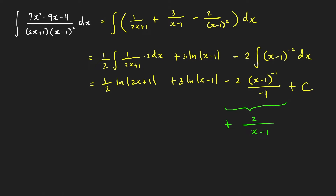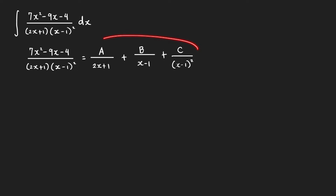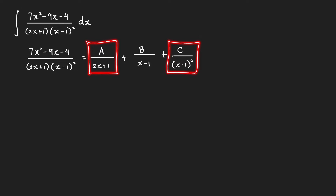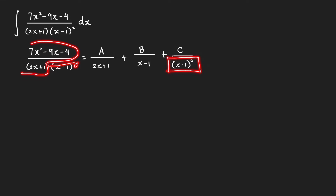Now let me share with you a faster technique for finding the values of a, b, and c. We go back to our integral and the partial fraction form. A faster way to find these values is to use what we call the cover-up technique for finding the values of a and c. We can use this technique because the denominator of a is (2x plus 1), and if you cover (2x plus 1) in the original function and plug in x that makes it 0, the remaining expression is defined and is a real number. Similarly for c.